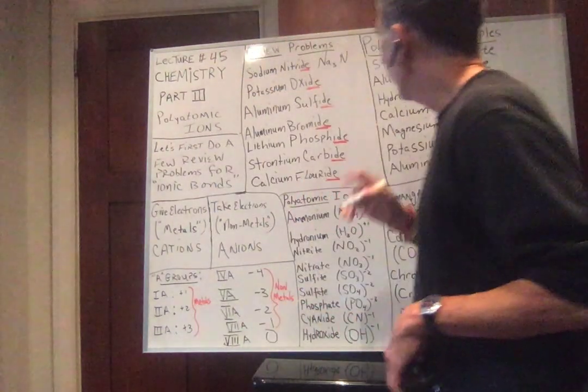Now the negative polyatomics — you need to learn these formulas and their charges. Nitrite, NO₂, has a charge of minus one. Nitrate, NO₃, needs one electron. Sulfite, SO₃, needs two electrons. Sulfate, SO₄, needs two electrons. Phosphate needs three electrons. Cyanide, CN, needs one electron. Hydroxide, OH, needs one electron. Permanganate, MnO₄, needs one electron. Carbonate, CO₃, needs two electrons. Chromate, CrO₄, needs two electrons. Peroxide, O₂, needs two electrons.